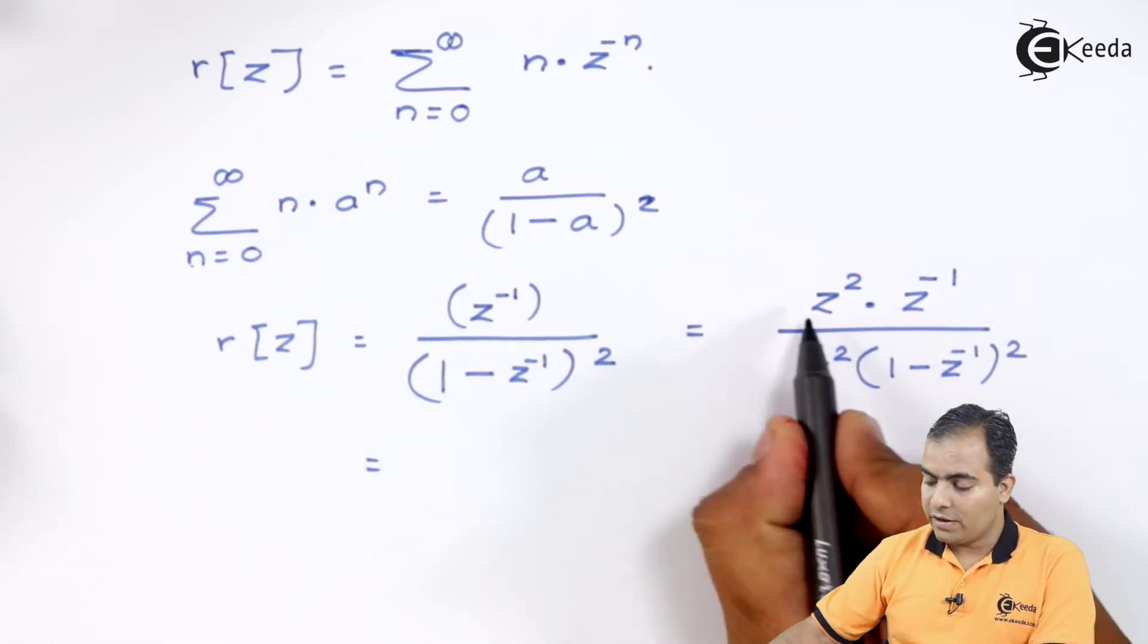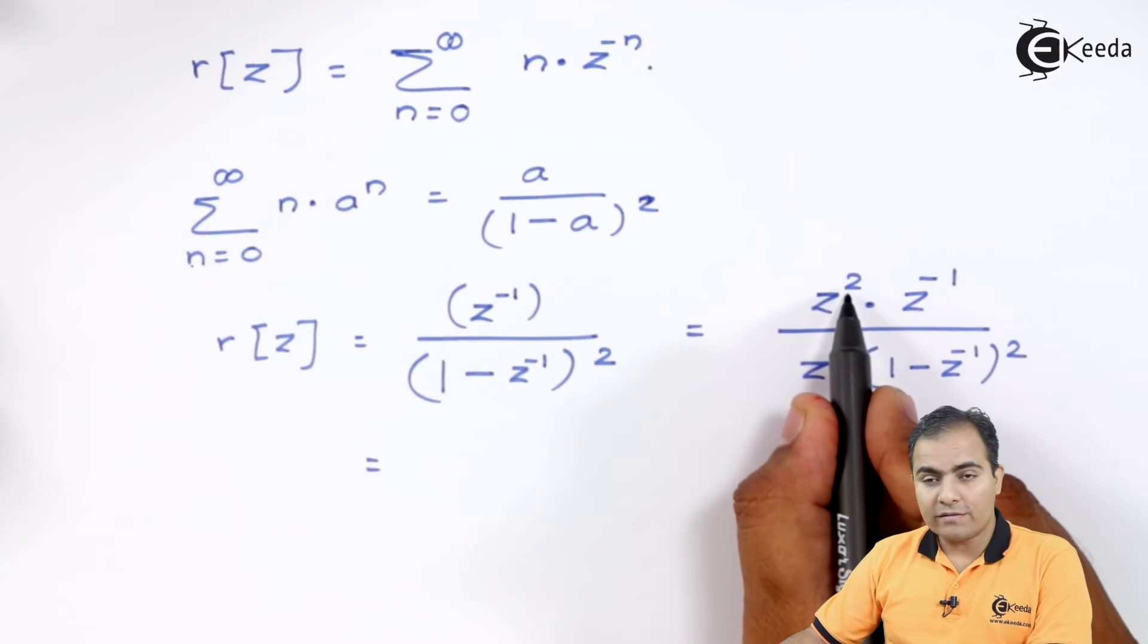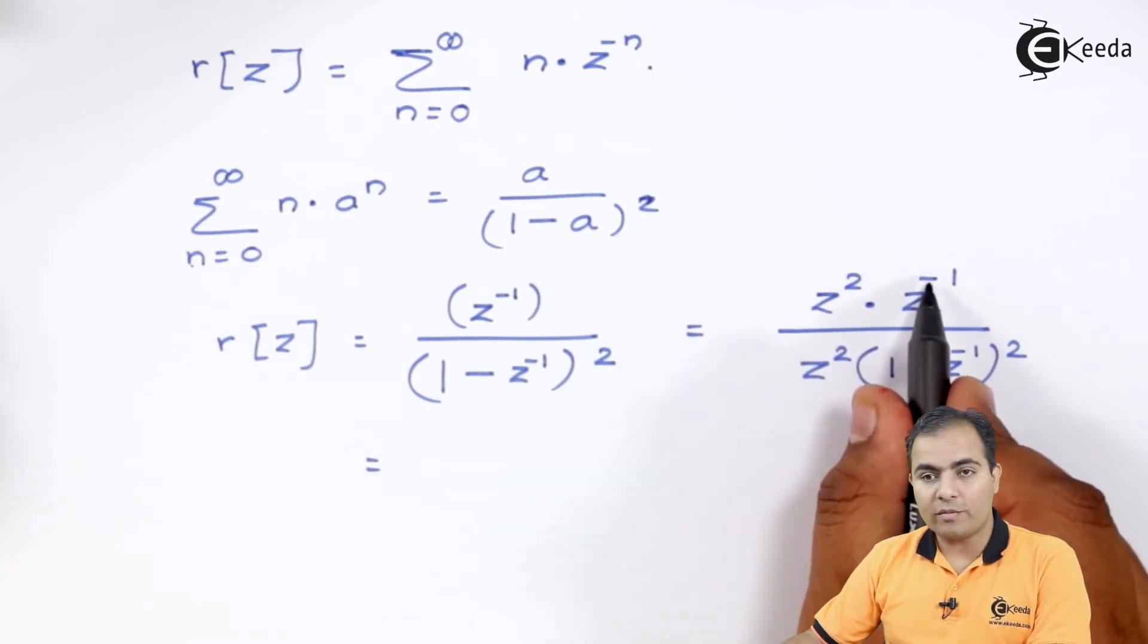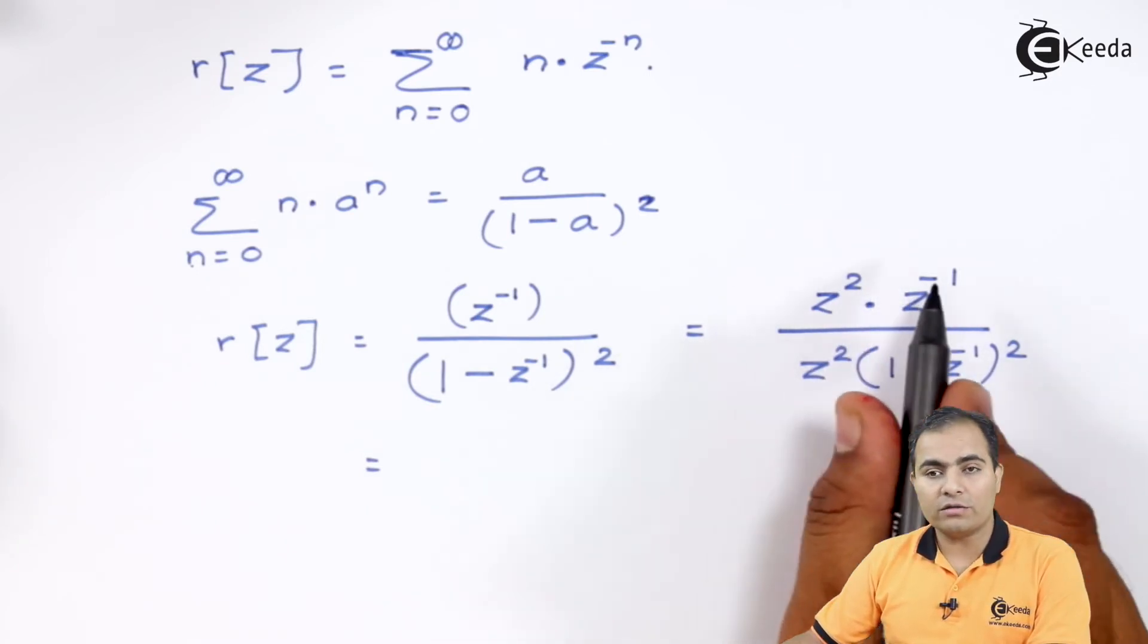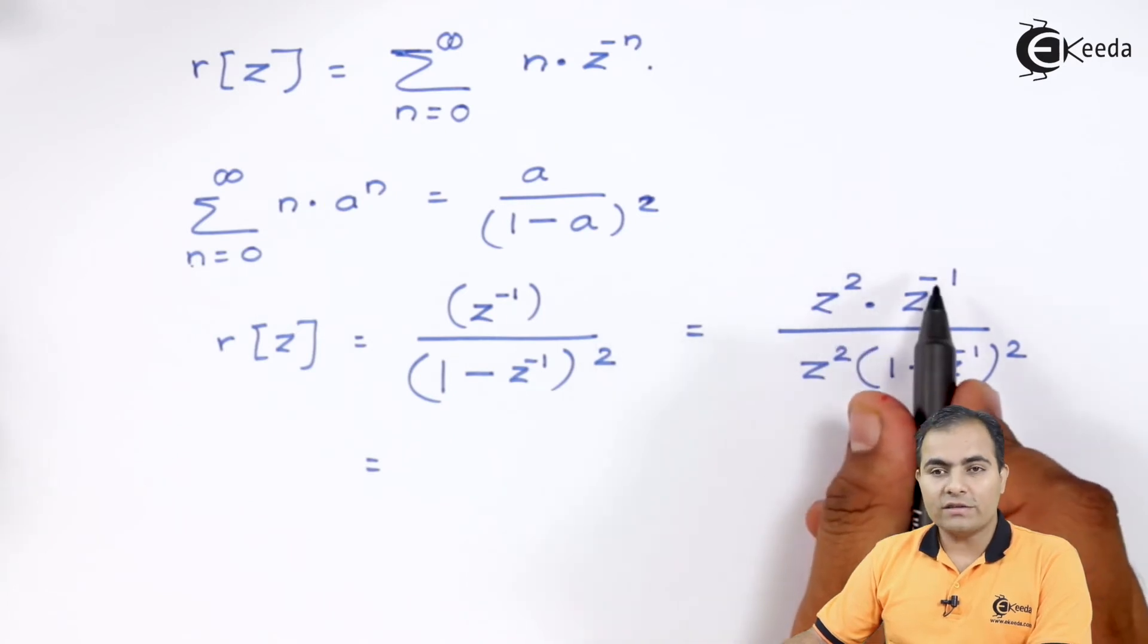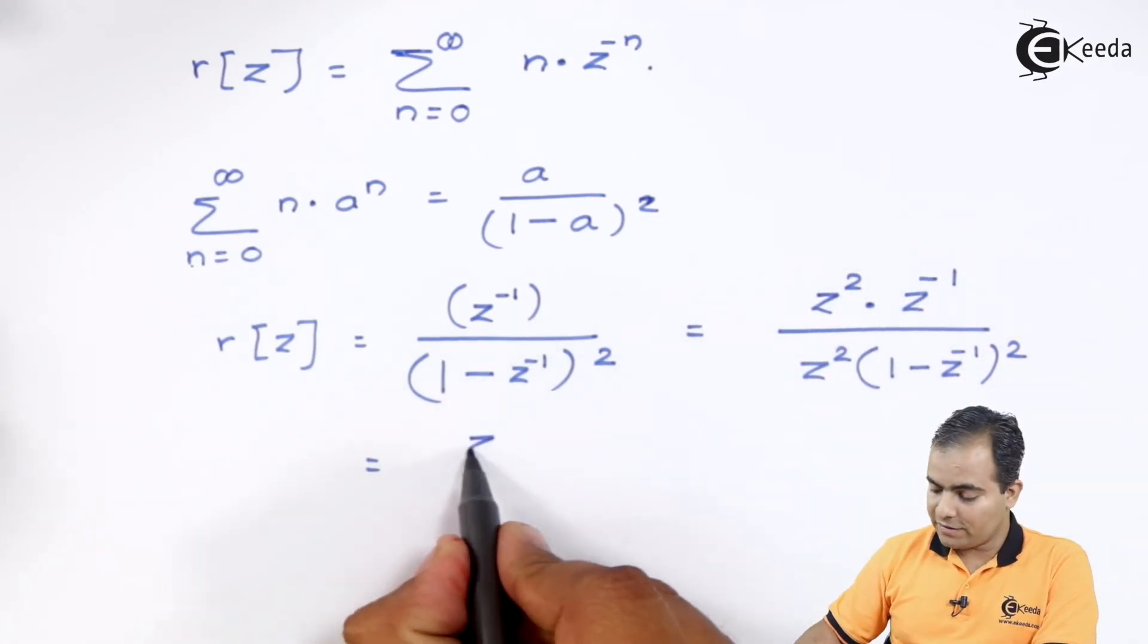So, in numerator what we have? Here we have z to the power plus 2, here we have z to the power minus 1. If the bases are same then orders always gets added. So, 2 minus 1 answer is 1. So here we have z in the numerator.